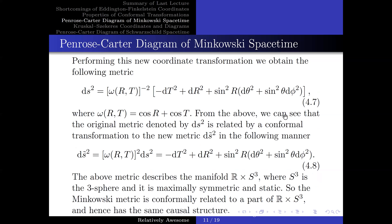From the above, we can see that the original metric ds² is related by a conformal transformation to the new metric ds̃² in the following manner. The above metric describes the manifold ℝ × S³, where S³ is the three-sphere, and it is maximally symmetric and static. So the Minkowski metric is conformally related to a part of ℝ × S³, and hence has the same causal structure.